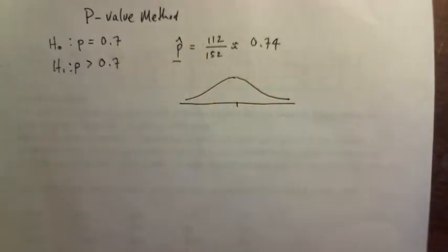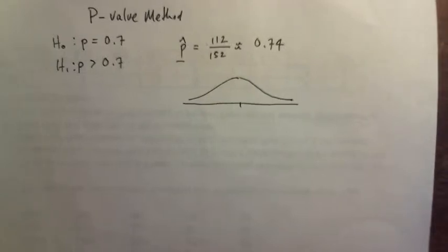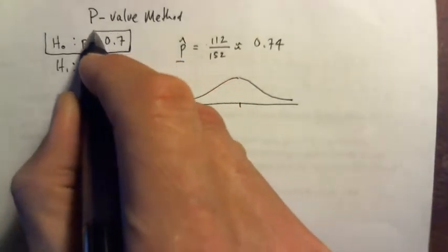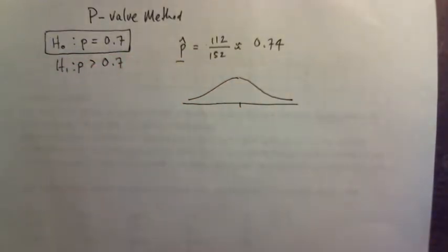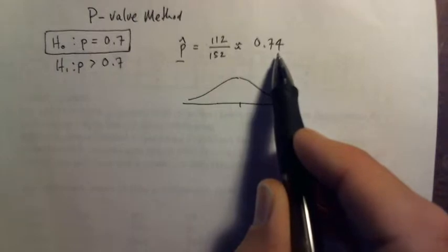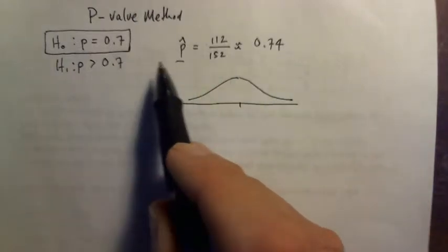The reason I pointed over at that is because what we do with a hypothesis test, invariably, always, we assume that the null hypothesis is the truth, and we put the burden of proof on the alternative hypothesis. This p-hat does support the alternative hypothesis some. It's bigger than 0.74.